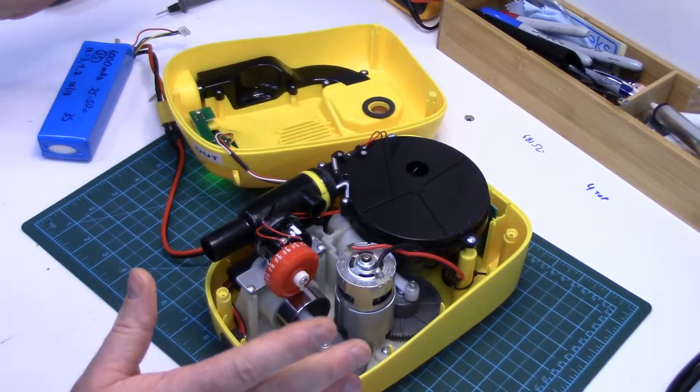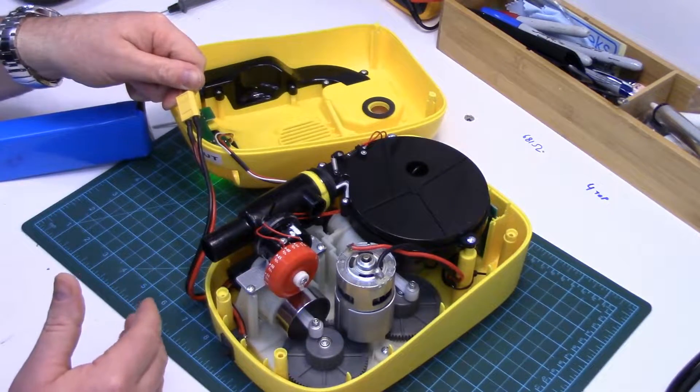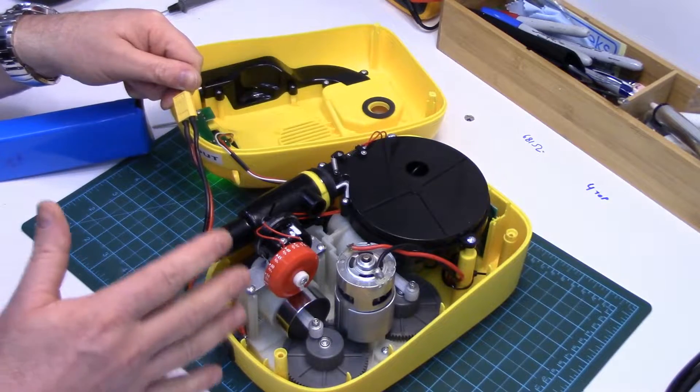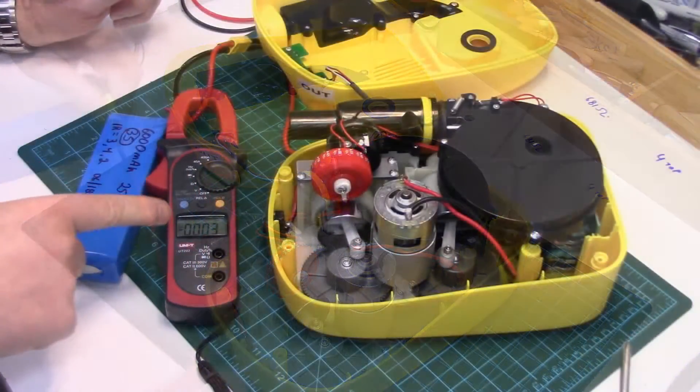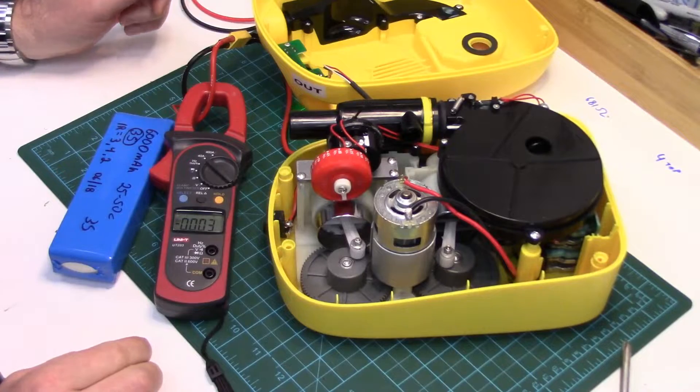The one thing that I wanted to do though, is find out what the actual current draw is on it and that might help you to decide what kind of battery capacity you need for this depending on how much time you need it to be running. So we've got the clamp meter hooked up to this, so we can check the amperage.